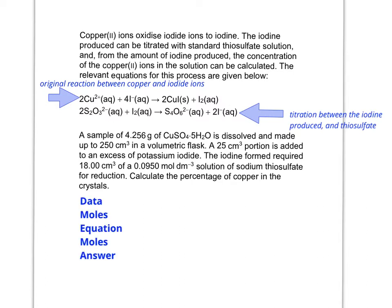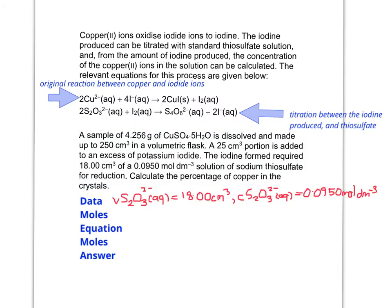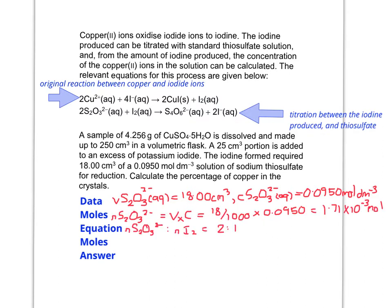To focus on the data you're given: the first thing you need to do is work out the moles of what you have enough information for. You have the volume and the concentration for the thiosulfate, so you can work out the moles of thiosulfate. From the balanced equation — equation 2, the titration equation — the mole ratio of thiosulfate to iodine is 2 to 1. So we end up with 8.55 × 10⁻⁴ moles of iodine.